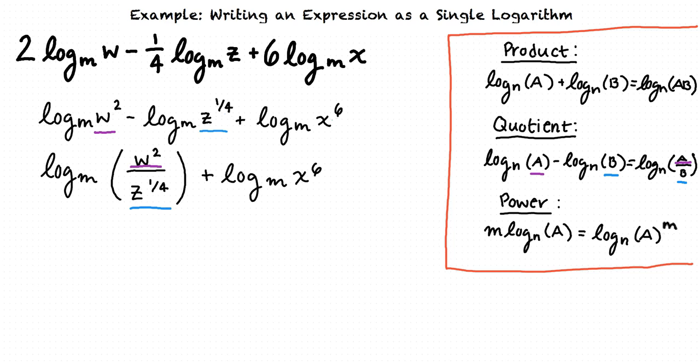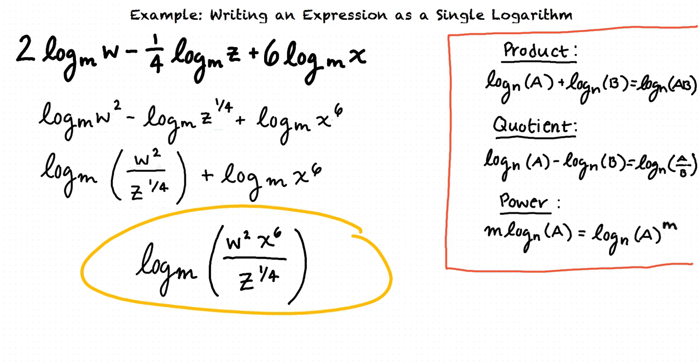Finally, we will use the logarithm of a product property to combine the two remaining terms. This results in log base m of w squared times x to the power of 6 all over z to the 1 fourth. This is our final answer.